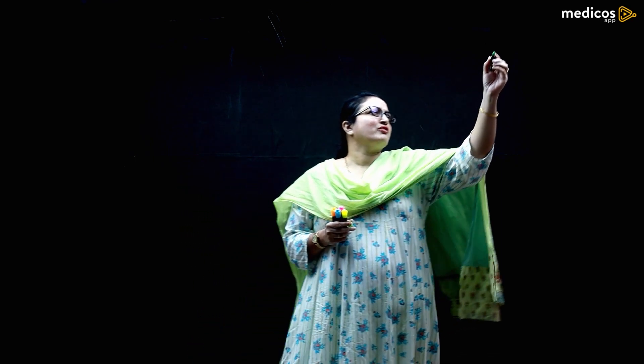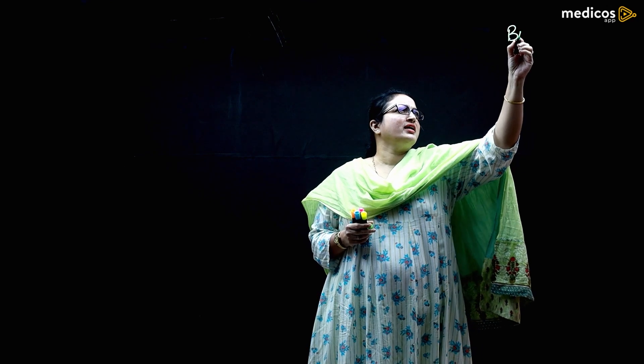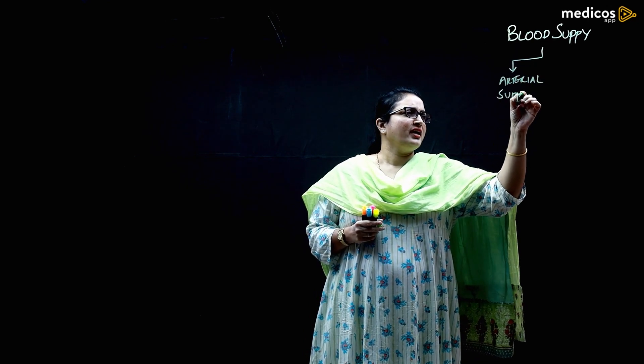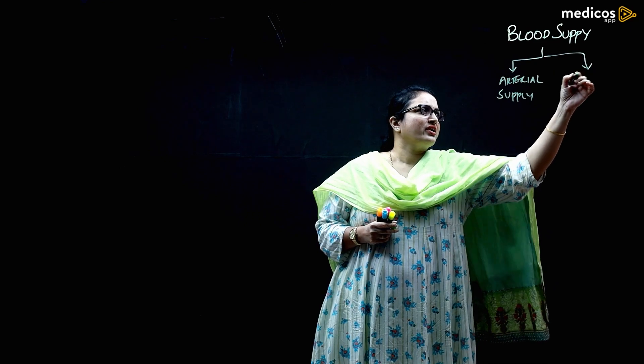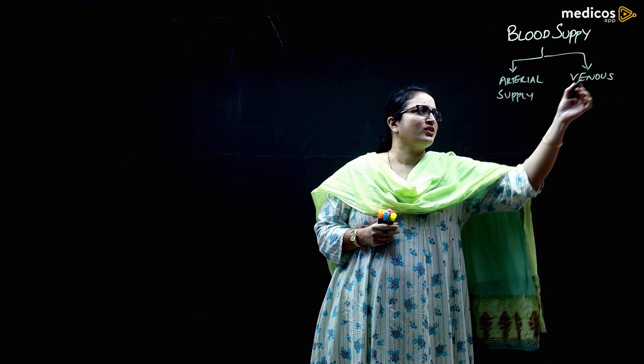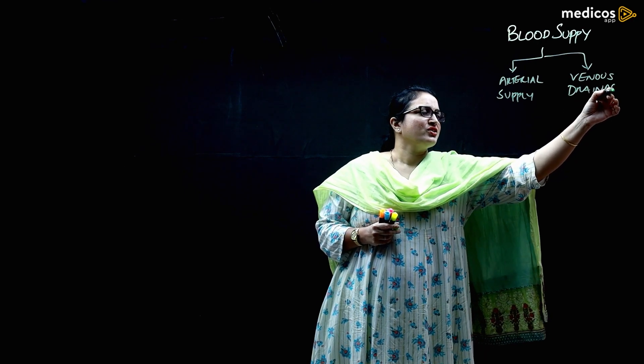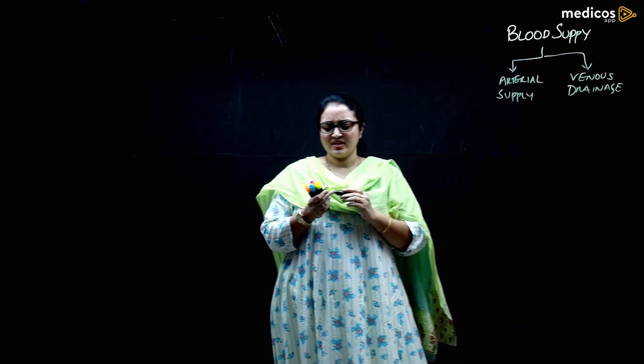Let us see the blood supply and nerve supply of the scalp. Blood supply includes arterial supply as well as venous drainage. Remember: arteries supply and veins drain.